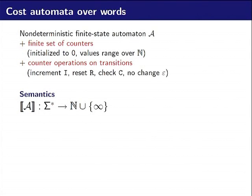So how can we use an automaton to define such a function? We start from a non-deterministic automaton A as usual, but we add some counters which start at value zero. On each transition we can do some operations on the counter: increment (add one to the value of the counter), reset (set the value back to zero), check (look at the value and put it in a bag for later use), or do nothing on the counter. We will use this automaton to define a function from a word to N with infinity value.